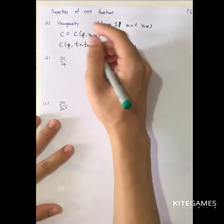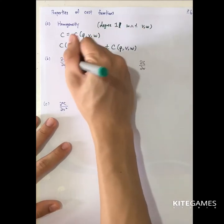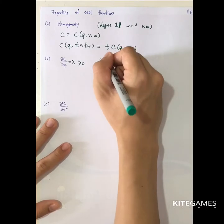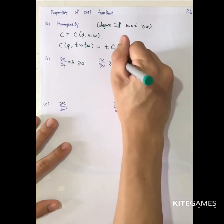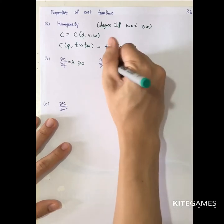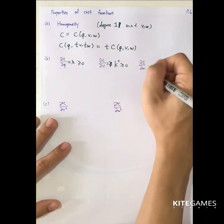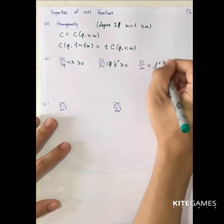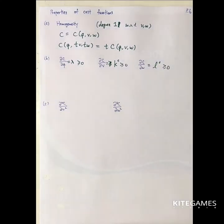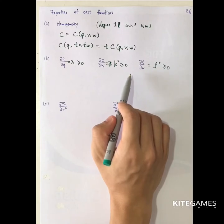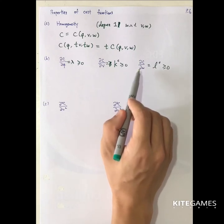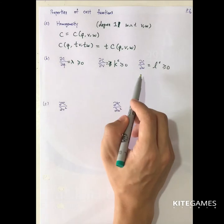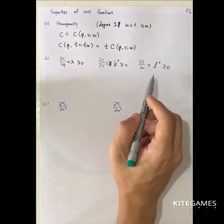Second, partial C over partial Q equals lambda, which is non-negative. Partial C over partial V is also non-negative, and this equals the contingent demand for capital. And partial C over partial W equals the contingent demand for labor — again, non-negative. This is similar to the compensated demand curve: differentiating the cost function with respect to the labor input is analogous to differentiating the expenditure function with respect to price.